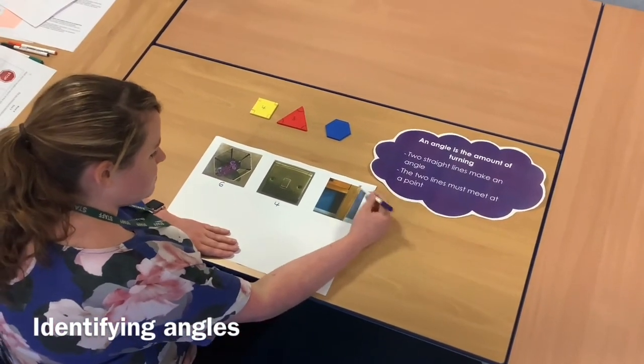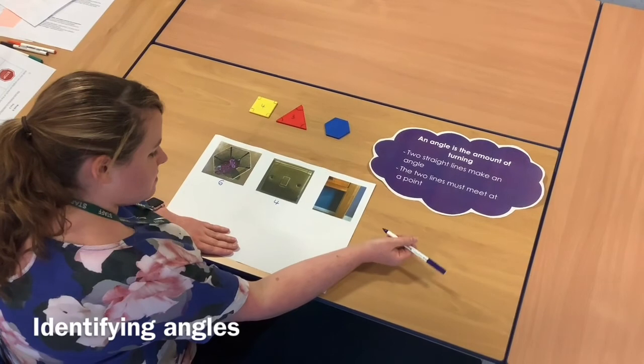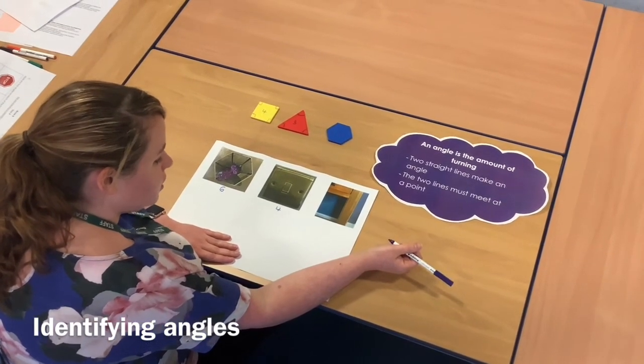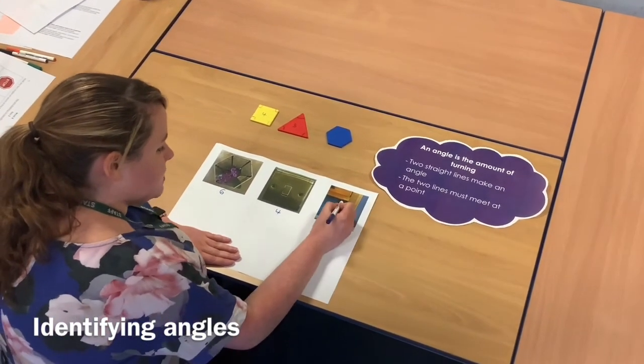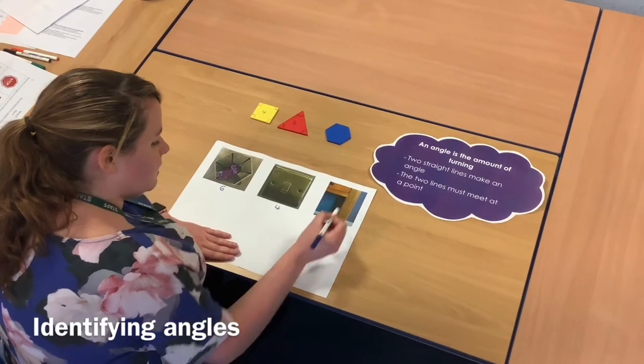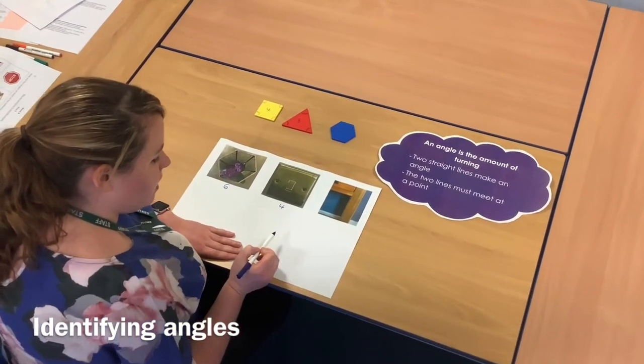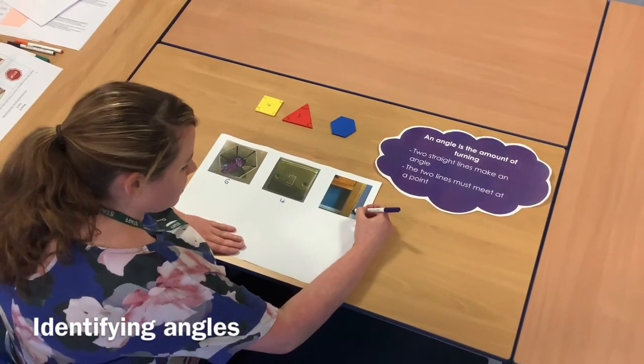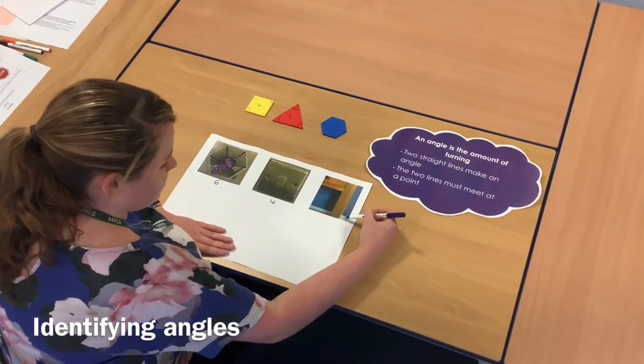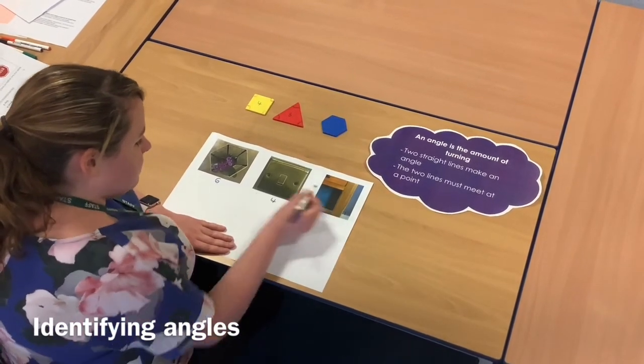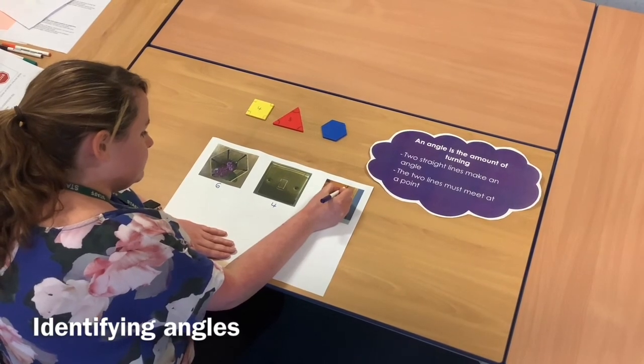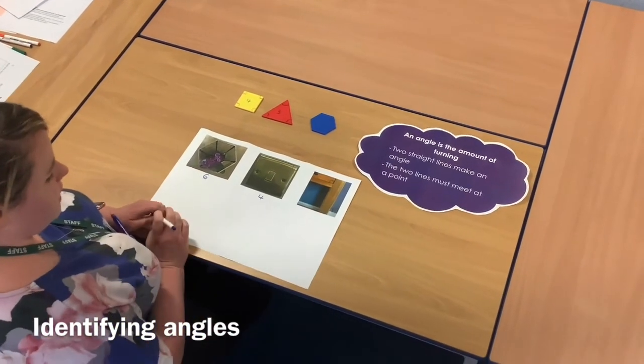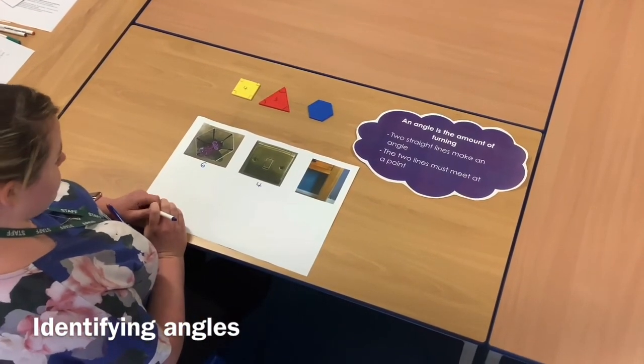On this picture, there's quite a few angles that I could label. Obviously, I can see one here, where I've got two straight lines. I've also got here, where two straight lines are meeting. With the cabinet, with the skirting board here. I've also got the drawer, along with others that I could identify.